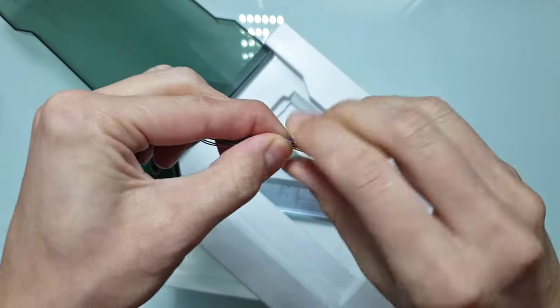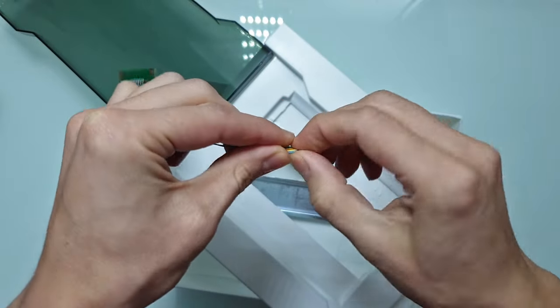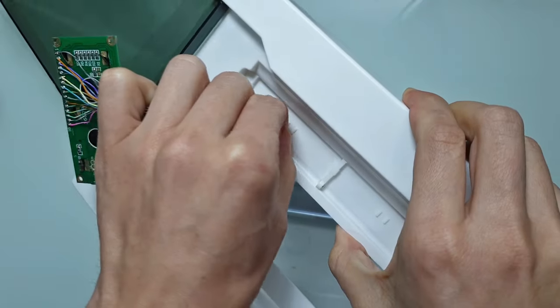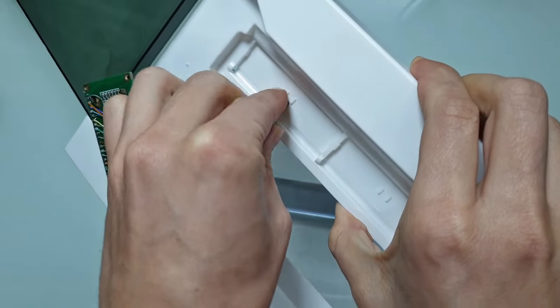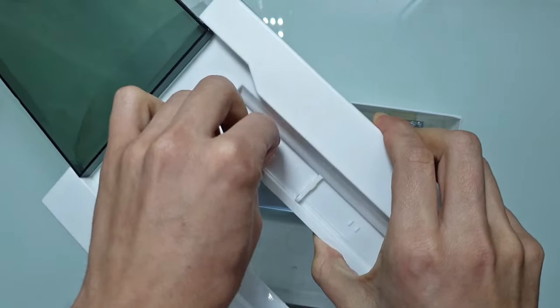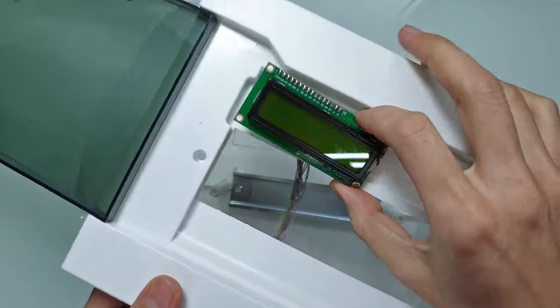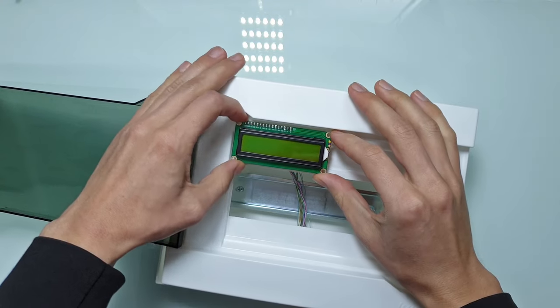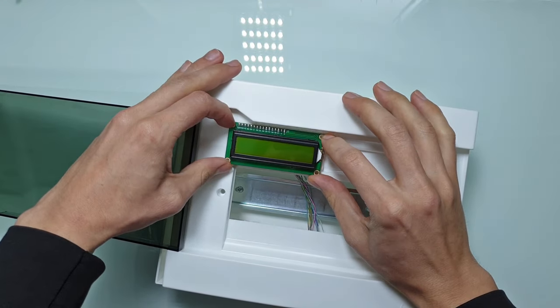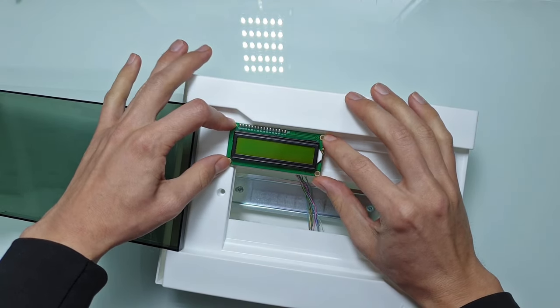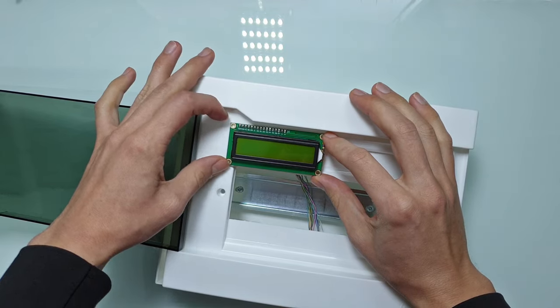Since I'm building a smart distribution board, I need a display to show some useful information. I decided to use a 1602 LCD display with an I2C bus module. It would be much cooler to use an OLED display here, but OLEDs have burn-in issues and the display should be capable of working 24/7 for many years. So this LCD looks like a good solution here.